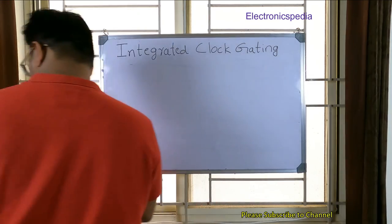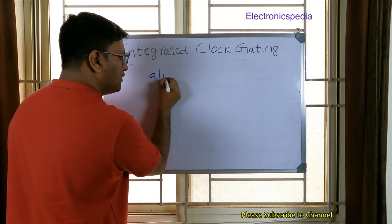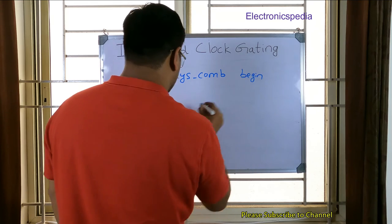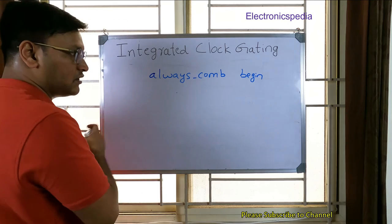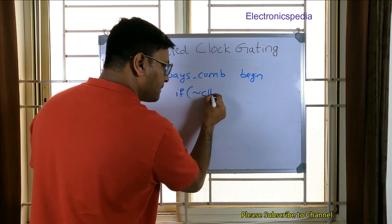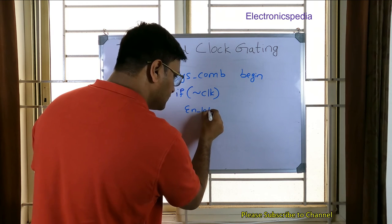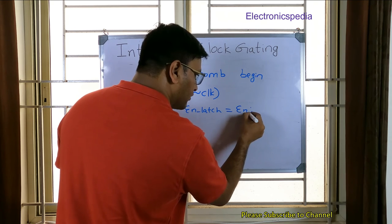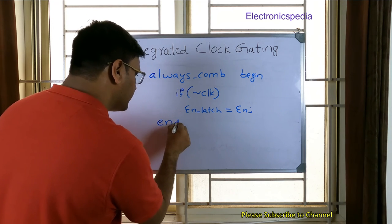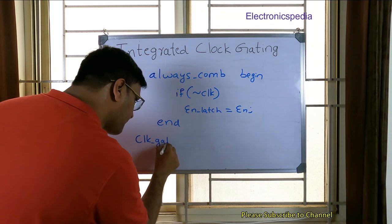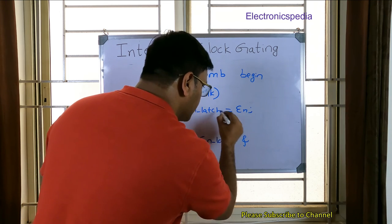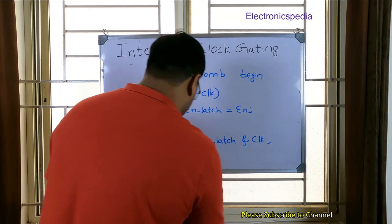For the Verilog code, I'll use an always block written as 'always_comp begin'. Since it's a latch, it depends on level sensitivity, not the positive or negative edge of the clock. So: 'if (!clk) enable_latch = enable;' — we sample the enable signal only when the clock is at its active-low value. Then, the clock gated output equals enable_latch AND the clock signal.